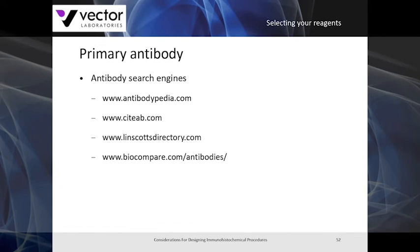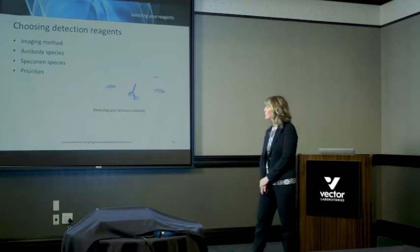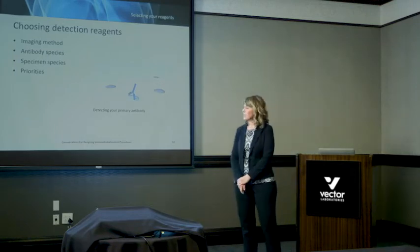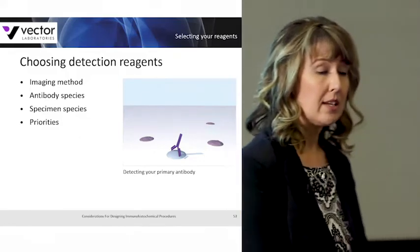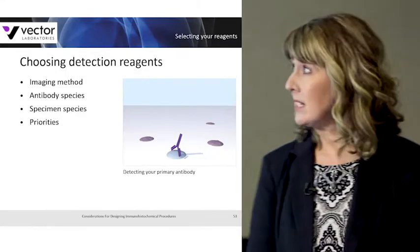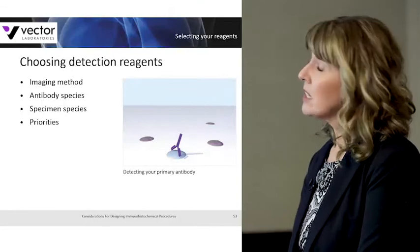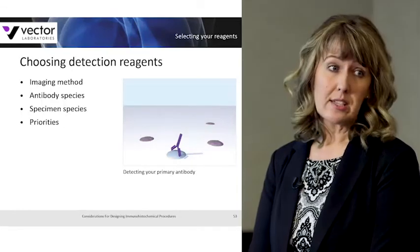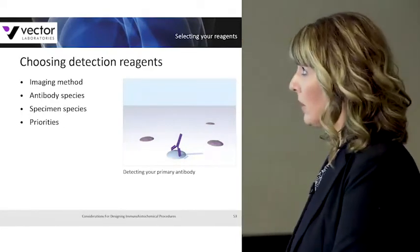After you've decided on your primary antibody, you'll need to choose your detection reagents. These reagents will be based on imaging method, antibody species, specimen species, and the priorities you've determined for your laboratory or experiment.